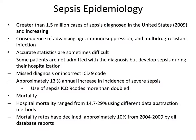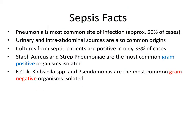Sepsis Epidemiology. Sepsis is quite common in hospitalized patients, with greater than 1.5 million cases diagnosed in the United States in 2009, and this pattern has been increasing. Earlier statistics were difficult to come by because patients were often not admitted with a diagnosis of sepsis, developed it during hospitalization, and it became their discharge diagnosis. Mortality has gradually declined approximately 10% from 2004 to 2009 database reports. Pneumonia is by far the most common site of infection in approximately 50% of cases, but urinary and intra-abdominal sources are also common origins.